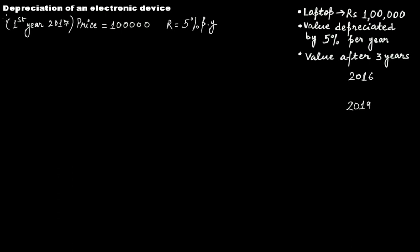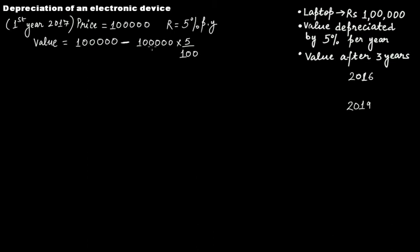For the first year, that is 2017, you can think of the initial price of the laptop — 1 lakh — as the principal. The depreciation rate is 5% per year, meaning the value decreases every year. At the end of 2017, the value will be 1 lakh minus 5% of 1 lakh, which gives rupees 95,000.